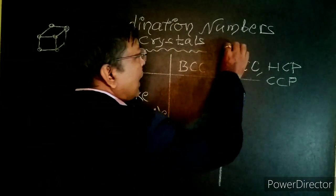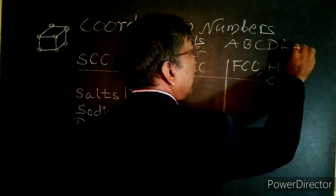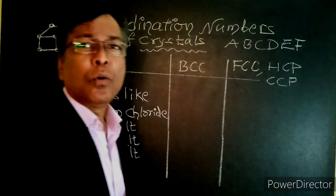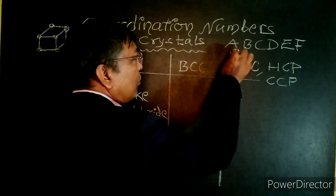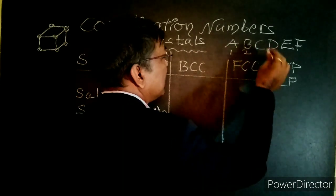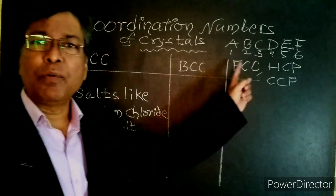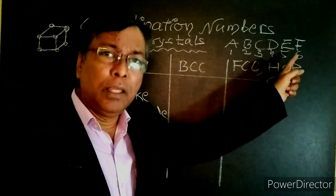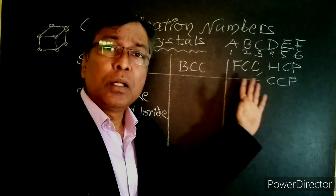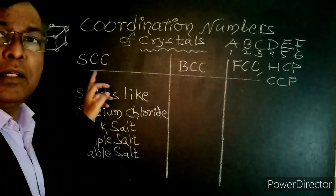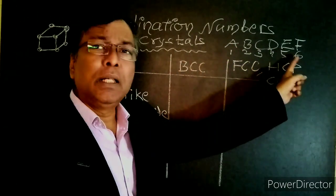In the first trick, we have to write alphabets from A to F and number them: A is 1, B is 2, C is 3, D is 4, E is 5, and F is 6. Using this technique, we are going to find the coordination number of different types of crystalline solids.